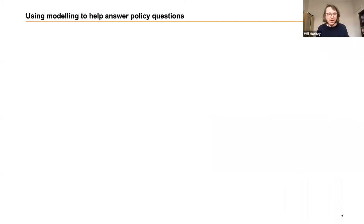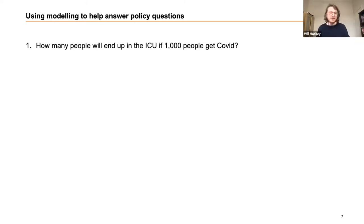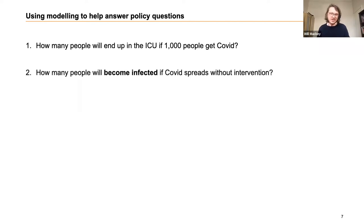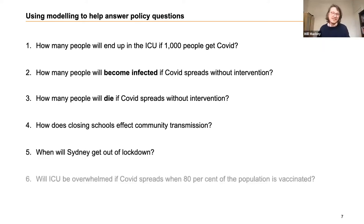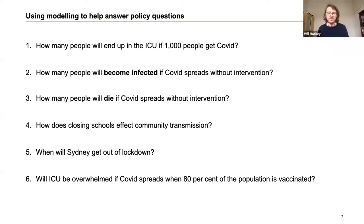We want to use modeling to help answer policy questions. I'll run through six questions that will be familiar if you've been engaged with COVID in Australia: how many people will end up in the ICU if a thousand people get COVID; how many people will become infected if COVID spreads without intervention; how many people will die; how does closing schools affect community transmission; when will Sydney get out of lockdown; and when will ICU be overwhelmed if COVID spreads when 80% of the population is vaccinated.